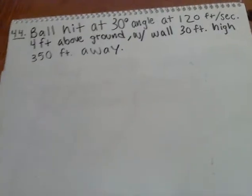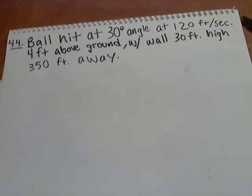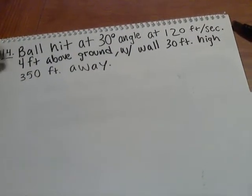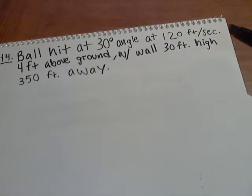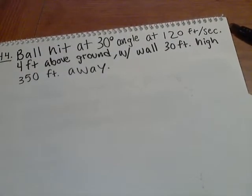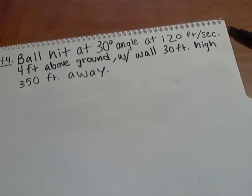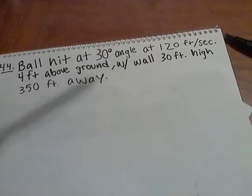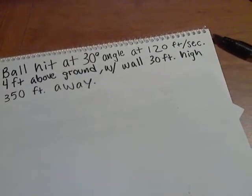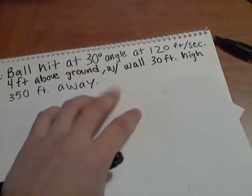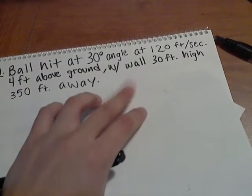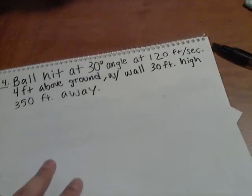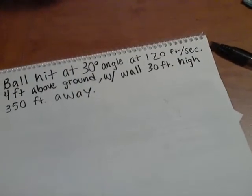The problem I'm going to show you today is problem 44 on page 531. This problem is dealing with baseball. We got a baseball player named Kirby that hits a ball at a 30 degree angle at 120 feet per second, four feet above the ground, and towards a wall 350 feet away and 30 feet high. So try to imagine that real quick.